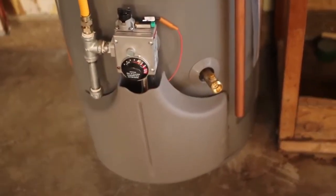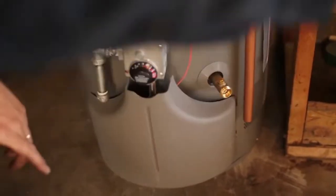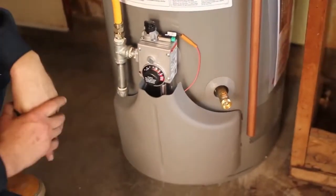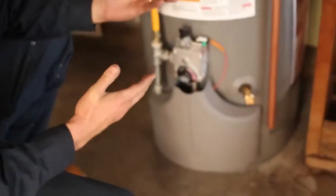You've got a drain valve right down here. You can go ahead and connect a garden hose to that. Run it to the outside somewhere safe where there's no plants or grass where it can damage them. If the water is cold of course, you can go ahead and put it on the lawn and save some water.